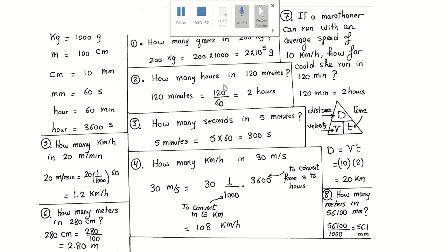Question number two: how many hours in 120 minutes? Since one hour equals 60 minutes, one minute equals 1/60 of an hour. To convert from minutes to hours, divide by 60. So 120 minutes equals 120 divided by 60, which equals 2 hours.